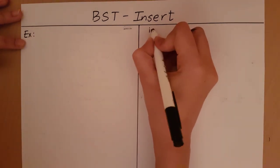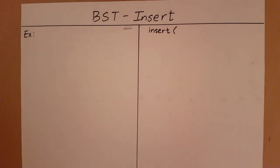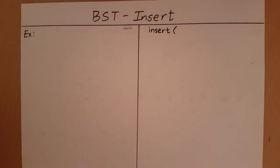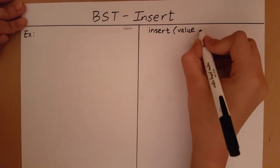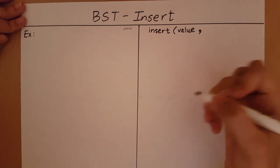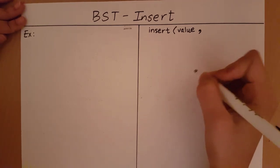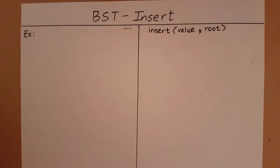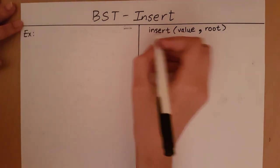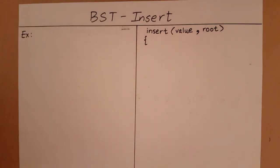Our algorithm is going to take in two things as input. First, it will take in the value which we must add to the binary search tree. Then we need to take in the tree itself — specifically the root, because from the root all other nodes of the tree can be accessed.